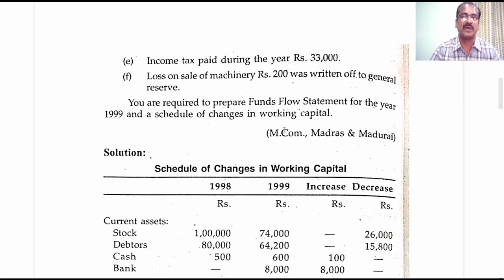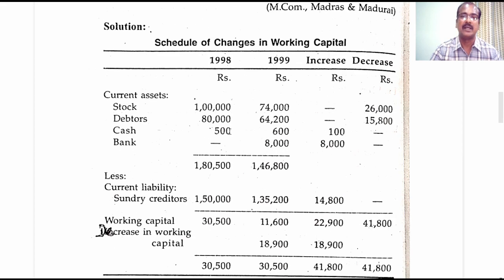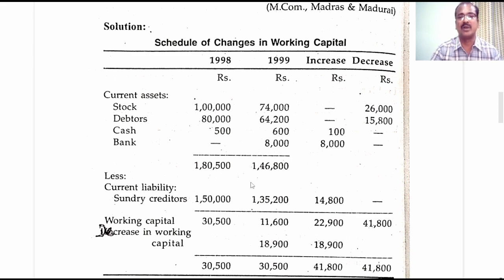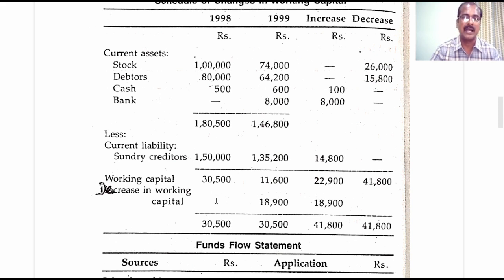We are required to prepare a funds flow statement for the year 1999 and a schedule of changes in working capital. Current assets and current liabilities are taken over to the schedule. There are four formulas to keep in mind: increase in current asset leads to increase in working capital; decrease in current asset leads to decrease in working capital; decrease in current liabilities leads to increase in working capital. Keeping in mind these four formulas, you can prepare the schedule of changes in working capital, and the answer is a decrease in working capital amounting to 18,900.